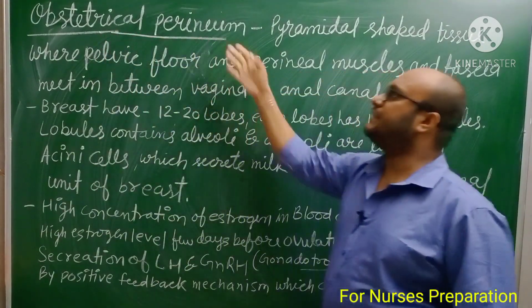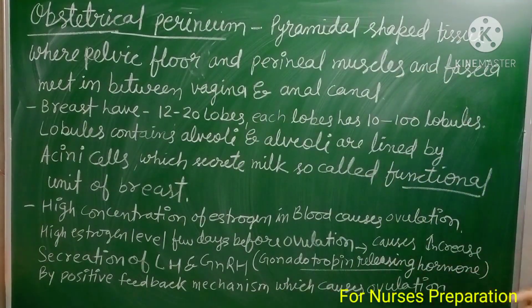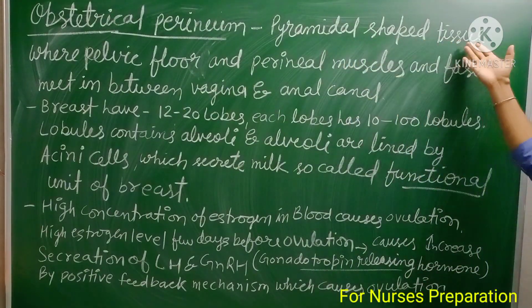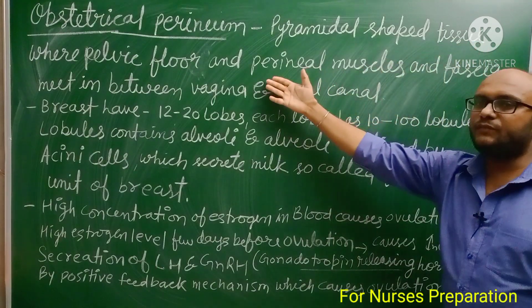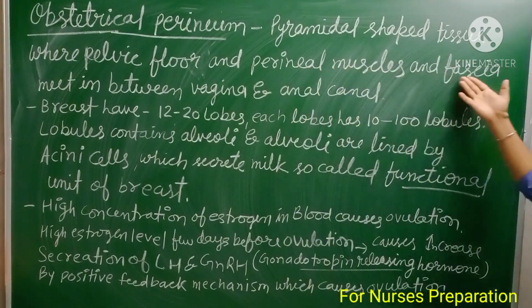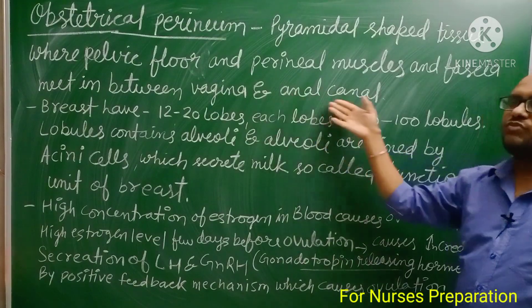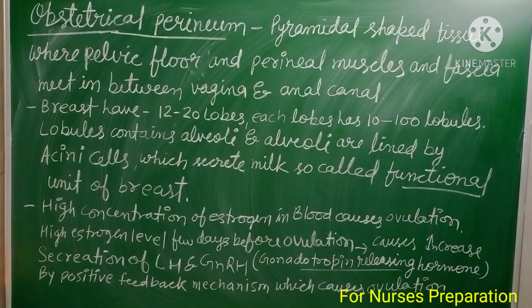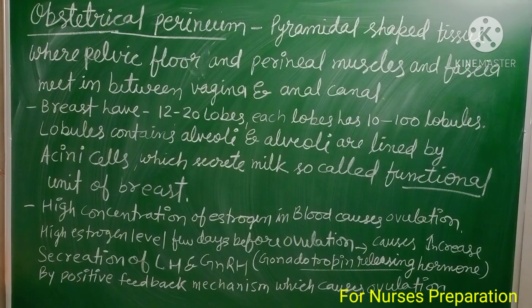The obstetrical perineum is a pyramidal-shaped tissue found between the vagina and the anal canal. It is formed by the joining of the pelvic floor, perineal muscles, and fascia.